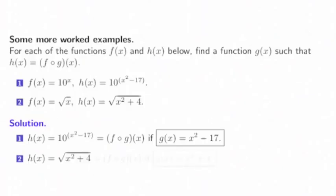In the second example, suppose h of x is the square root of x squared plus 4, and we want to write that as f composed with g where f of x is the square root function. Then make g of x be x squared plus 4, so f composed with g will be the square root of the quantity x squared plus 4. We're breaking h of x down into two pieces: g squares x and adds 4, and f takes the square root.